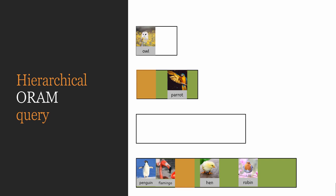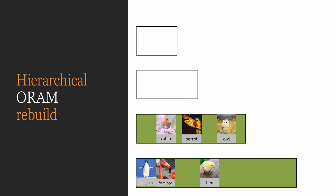Once an item has been queried from every level, it is inserted into the top level, called the cache. In the cache, every item is queried. Whenever the cache becomes too big, the entire data structure needs to be rebuilt. All levels that have an oblivious hash table, from the smallest until the largest in a contiguous sequence, are combined and built into a new oblivious hash table. The details of how the oblivious hash table is built without leaking any information about the contents of the data varies from scheme to scheme and will not be discussed in this talk.